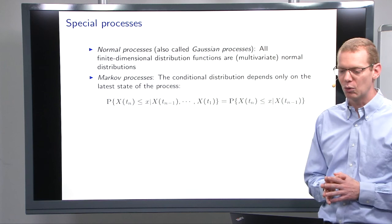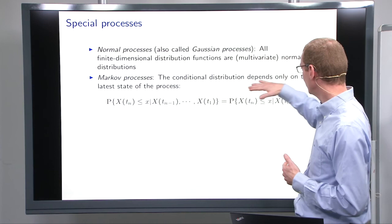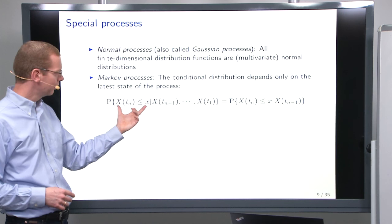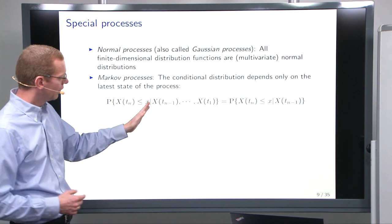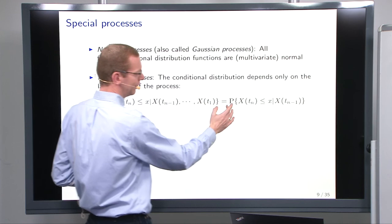Now, we also have so-called Markov processes. And what we have here is basically saying that the conditional distribution is only dependent on the latest data of the process. So, if you are looking at the probability here of xtn less than or equal x, given all the previous observations, if that only depends on the most recent observation and not the future, not the previous ones, then our process fulfills the Markov property.